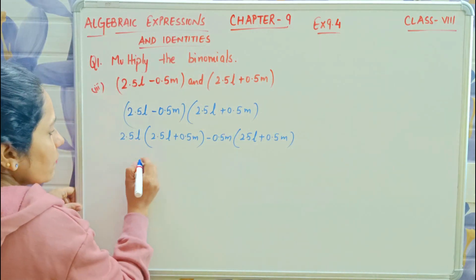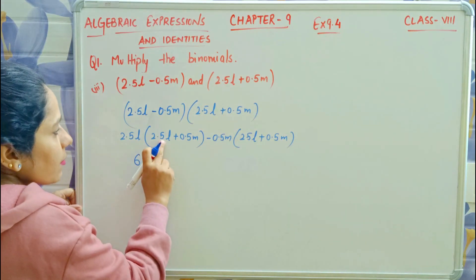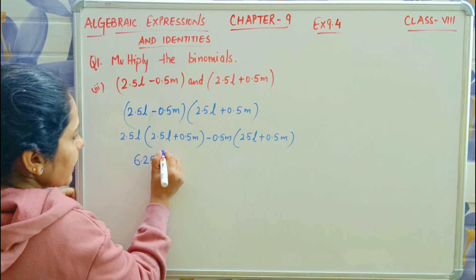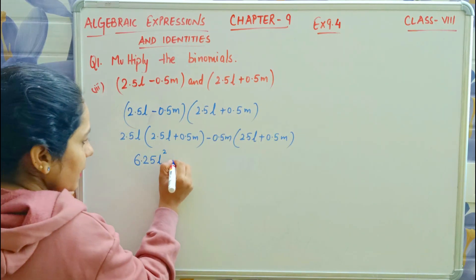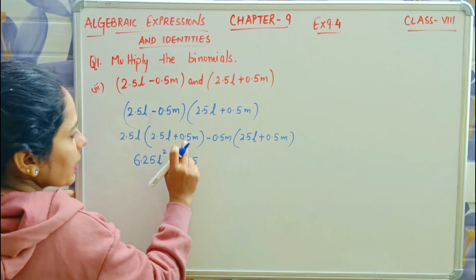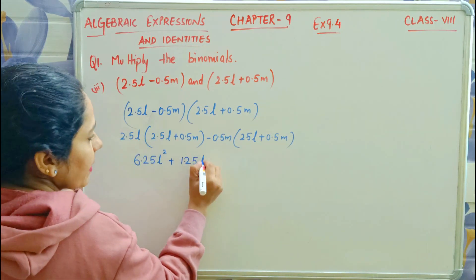25 into 25, we know is 625. You've studied square roots. One digit after the point here, one digit here, means one, two - two digits before the point. L times L is L squared. Plus 25 times 5 is 125, one digit after the point, one digit, two digits before decimal. L and M multiply to get LM.